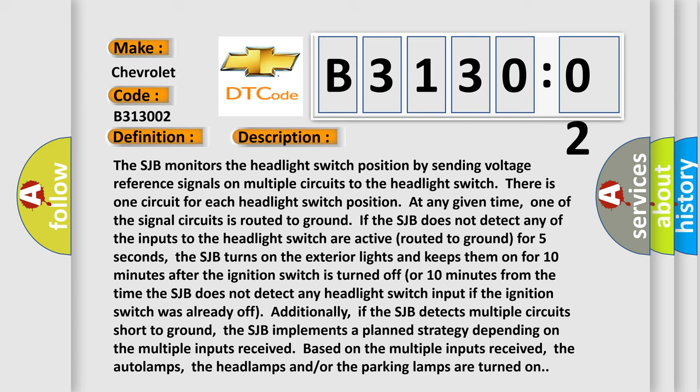If the SJB does not detect any of the inputs to the headlight switch are active routed to ground for five seconds, the SJB turns on the exterior lights and keeps them on for 10 minutes after the ignition switch is turned off, or 10 minutes from the time the SJB does not detect any headlight switch input if the ignition switch was already off.